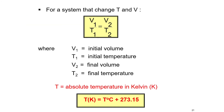For a system where temperature and volume change: V₁/T₁ = V₂/T₂, where V₁ is initial volume, T₁ is initial temperature, V₂ is final volume, and T₂ is final temperature. Temperature T must be in Kelvin (absolute temperature).